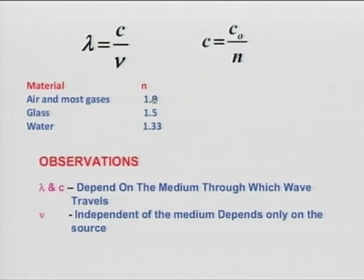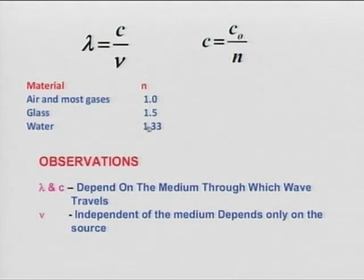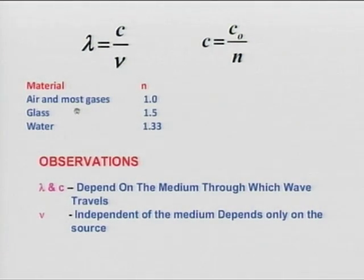Typical refractive indices: for air and most gases it is near 1; for water it is 1.33 — I remember measuring this in school by adjusting the angle of a prism; for glass it is 1.5.